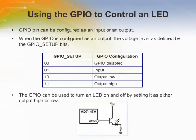The AD7147 has one GPIO pin that can be configured as an input or an output. When the GPIO is configured as an output, the voltage level on the pin is set to either a low or high level as defined by the GPIO set bits. The GPIO can be used to turn an LED on and off — GPIO output high turns on the LED, and setting it output low turns off the LED. The GPIO pin connects to a transistor that provides the drive current for the LED.